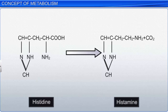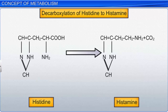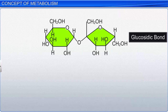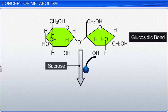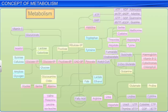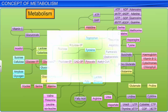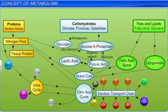For example, the decarboxylation of histidine gives histamine. Similarly, the hydrolysis of a glycosidic bond in sucrose yields glucose and fructose. Most of these reactions do not occur in isolation and are usually linked to other reactions. The series of linked chemical reactions that transforms biomolecules is called metabolic pathways.